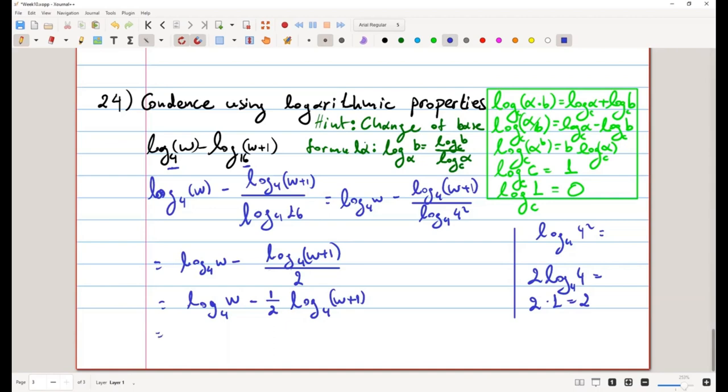For the second of the two logarithms. So we have log base 4 of w minus log base 4 of w plus 1 to the 1 half.